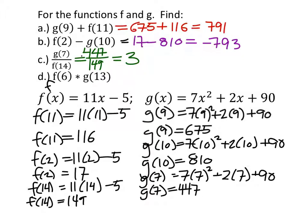Well, we'll skip into it then. F of 6. If we plugged it in, 66 minus 5, 61. And G of 13, 7 times 13 squared plus 2 times 13 plus 90. So I got 1299 times... I'm sorry, 61 times 1299. Not that it matters. It's a big number.